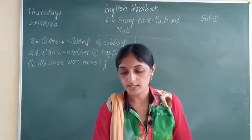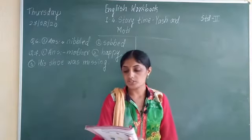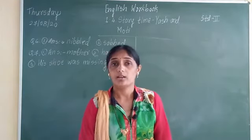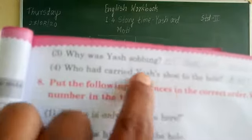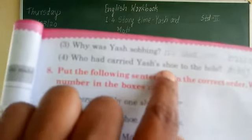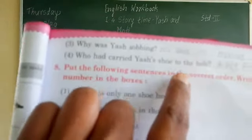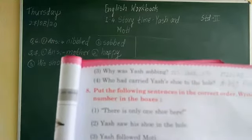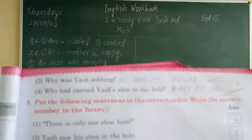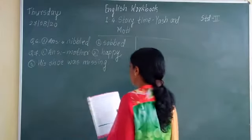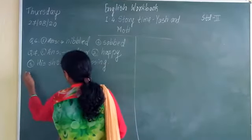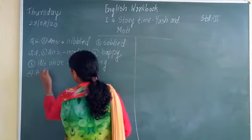The fourth question is: who had carried Yes's shoe to the hole? When his mother had bought him shoes, who carried the shoe to the hole? The answer is a big fat rat — a big fat rat had carried Yes's shoe to the hole.